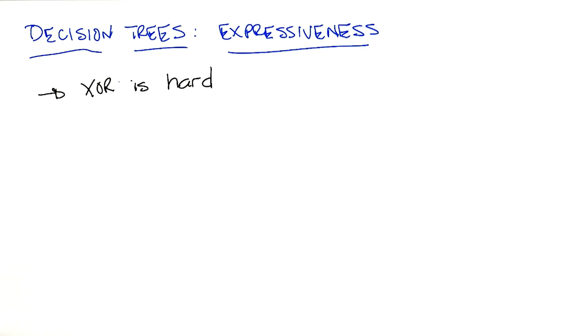All right, so what that last little exercise showed us is that XOR, in XOR parity, is hard, it's exponential.